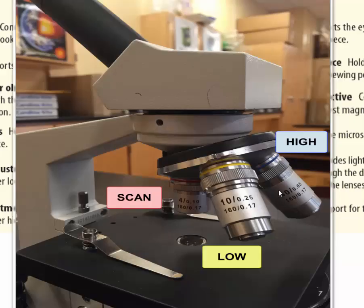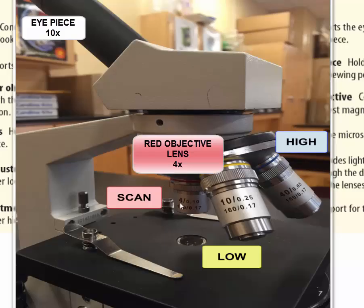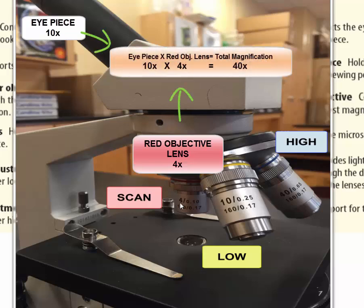Now earlier I mentioned that the eyepiece has a magnification of 10x or 10 power. This comes into play when we figure out total magnification of an object. The red lens here has the number 4, so when we take that 4 and multiply it by the 10 by the eyepiece that gives the red lens a total magnification of 40x. We just multiply the 4 by the 10 on the eyepiece.